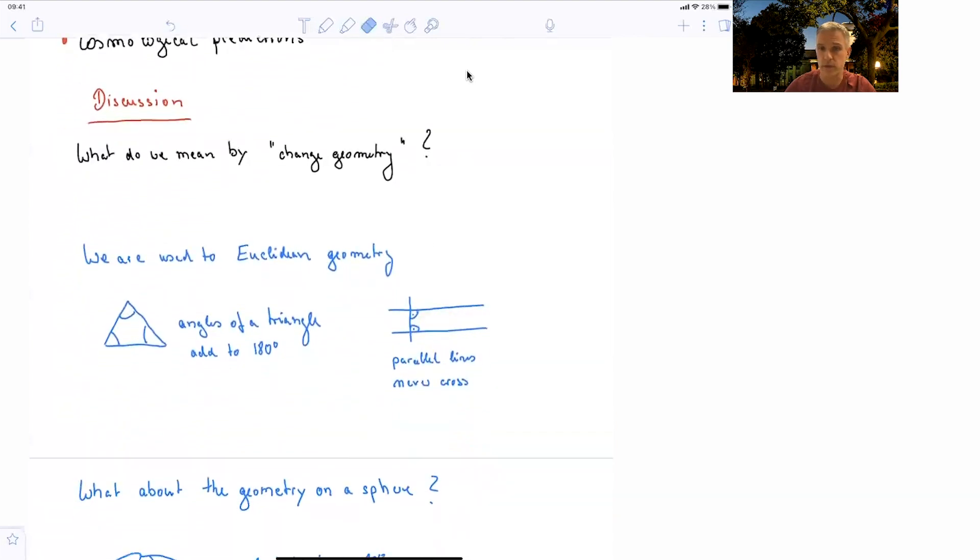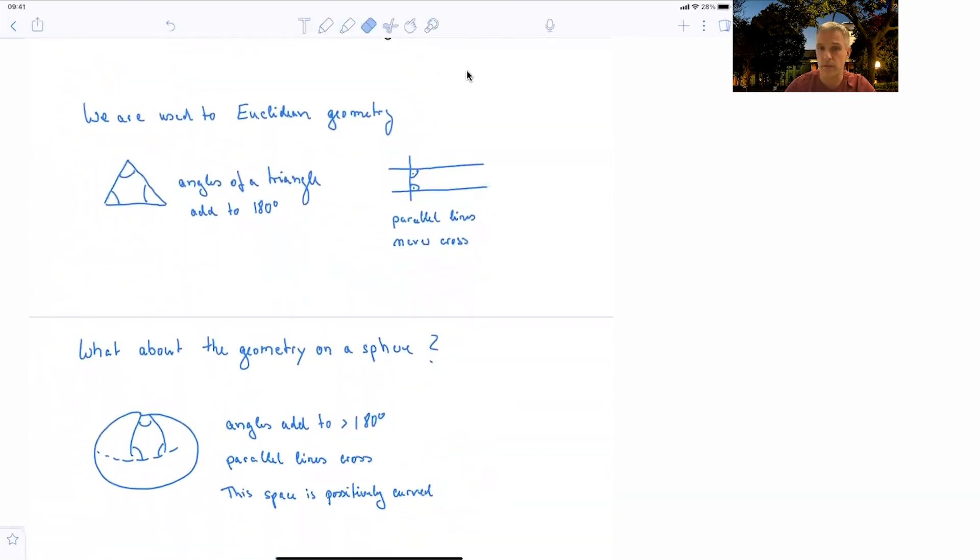But if you have a modified geometry, for example, the geometry on the sphere, like on our globe, the angles do not add up to 180 degrees. They're actually the sum is larger than 180 degrees, and parallel lines will cross. You would call this kind of space positively curved.